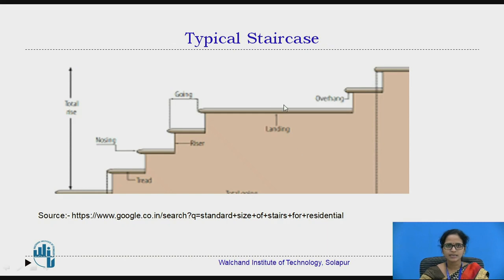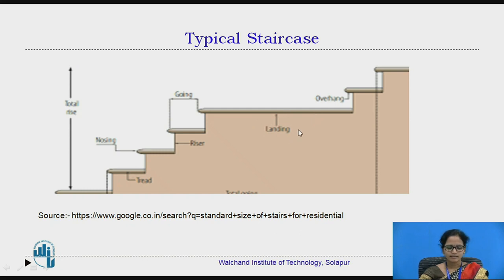This is a typical staircase. This is the tread — it is the horizontal portion of the stair where we keep the foot. The riser is the vertical distance which leads to the other flight. The landing is provided to change the direction of the flight.